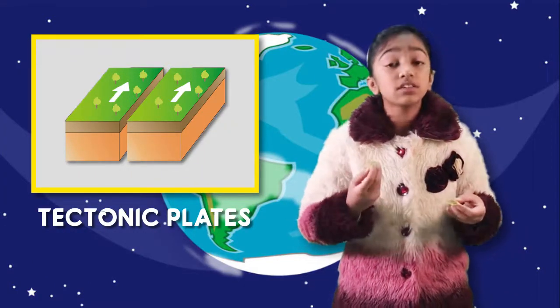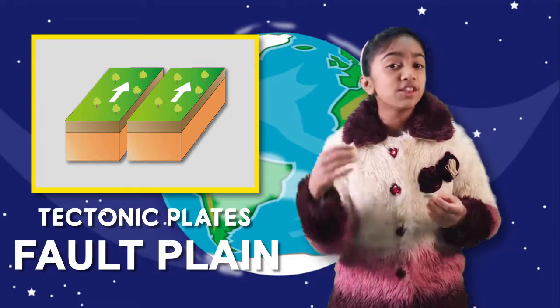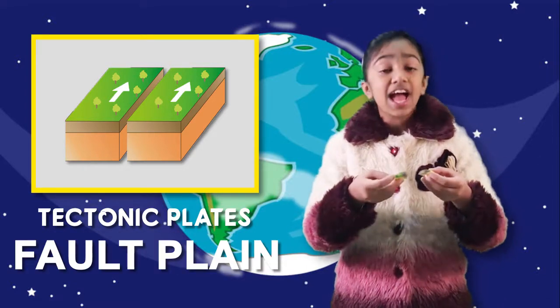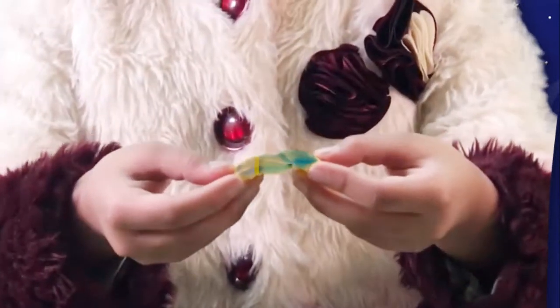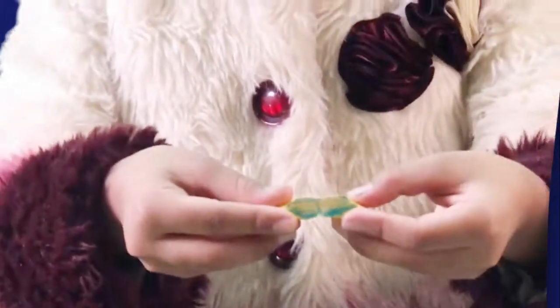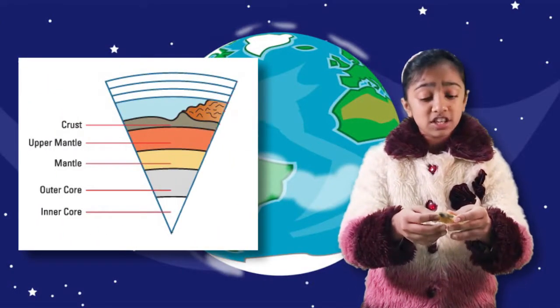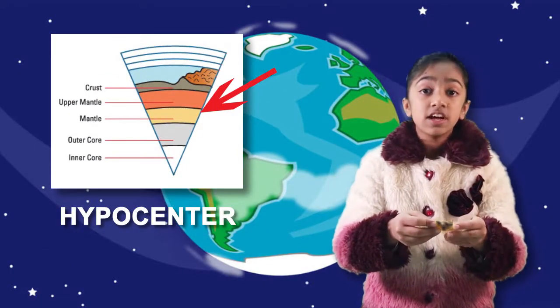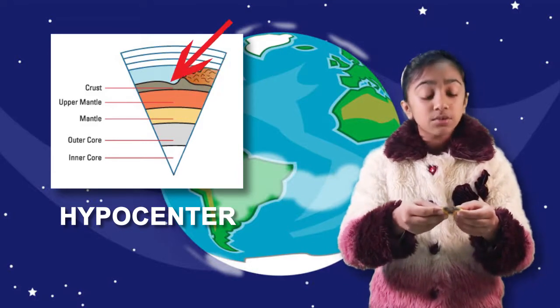Where the earthquake is felt over the Earth's crust is called the fault or the fault plane. So now let's zoom in and see how the earthquake is formed. Whenever the plates bump, press, or slide past each other, an earthquake is caused. Where the earthquake forms under the Earth's crust is called the hypocenter.